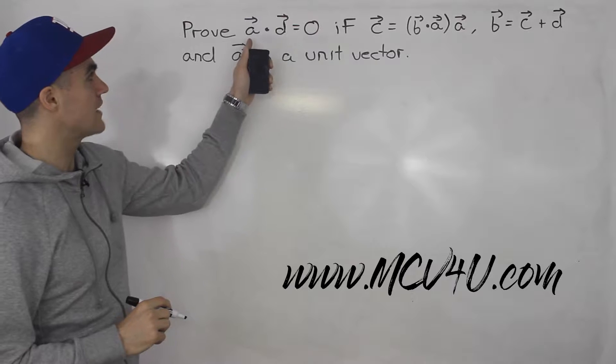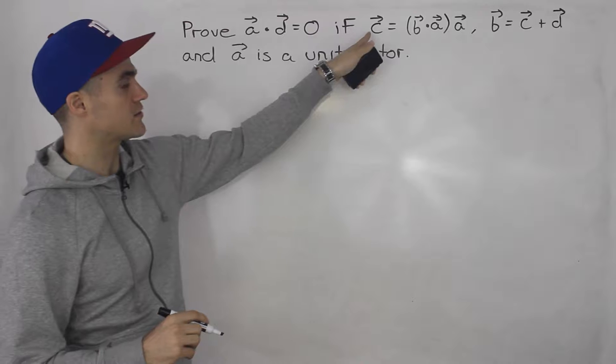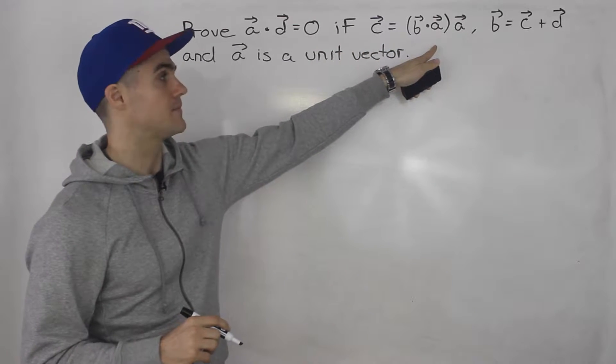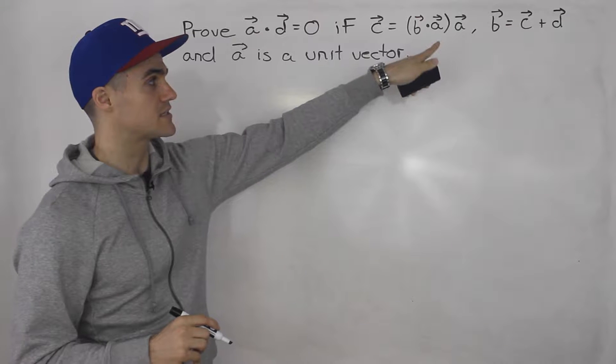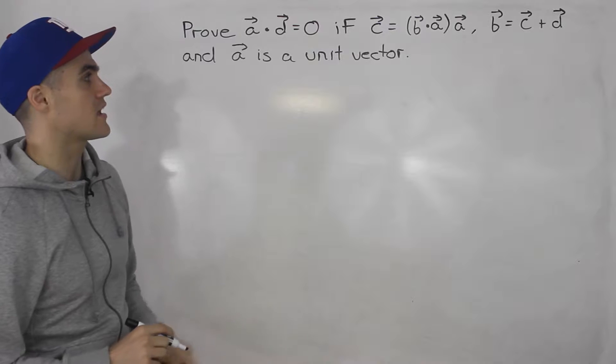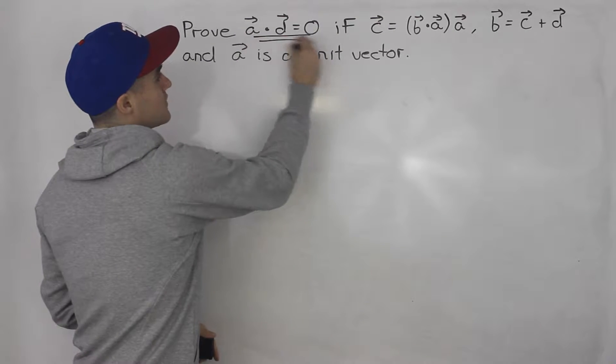So we have to prove that vector a dot vector d is equal to zero, if vector c is equal to b dot a times vector a, vector b is equal to c plus vector d, and vector a is a unit vector. So we got to prove this here.